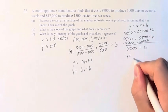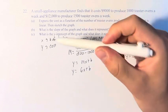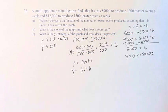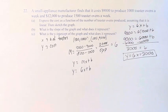Therefore, we can say that our equation is y equals 6x plus 3,000, where x is the number of toaster ovens and y is the cost. And we just have to graph it.